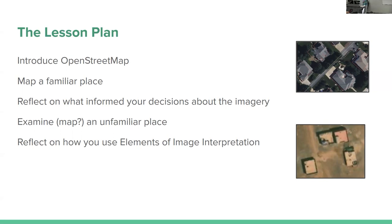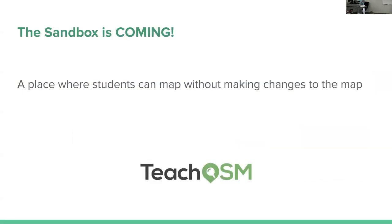Reflect on what those elements of interpretation are that inform what you're looking at. Is this a building or is it a fence compound? We're using shadows to determine what those things might be. I am so excited about the sandbox potential, because right now I have students map something familiar, but when they don't understand what a thing is it gets hard. With a sandbox, we could potentially build those places and give students three different areas where they might not be familiar, and have them go and try to understand what the elements of image interpretation are.